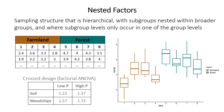This differs from the crossed design, which was covered in the previous video on factorial ANOVA. In crossed designs, all levels of one factor occur within all levels of the other factor. For example, there are soil samples in both low and high phosphate, wood chip samples occur in both phosphate levels, and low phosphate samples occur in both soil and wood chips.